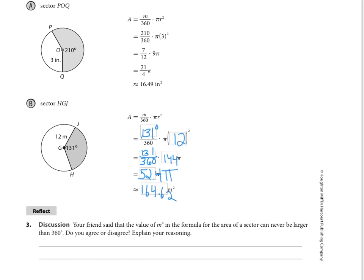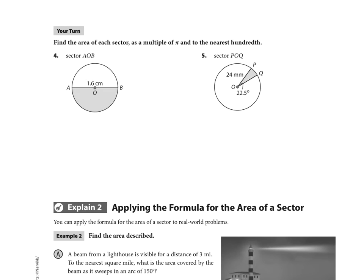So for the Your Turns on page 875, you're doing Your Turn number 4 and 5 in the same way we just did Explain 1. Make sure you do those before you head into Explain 2.